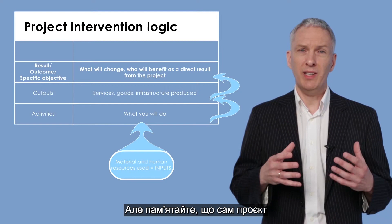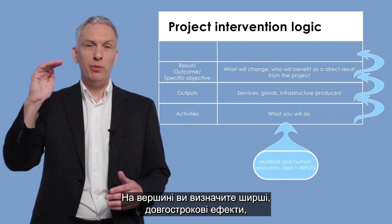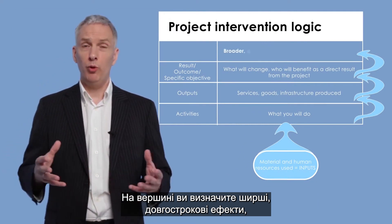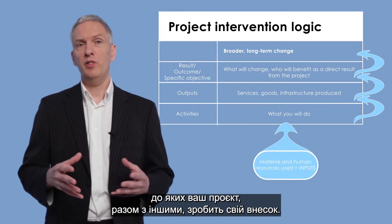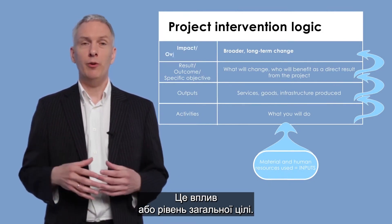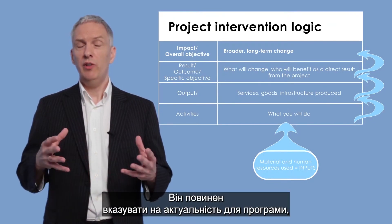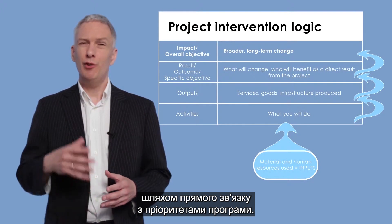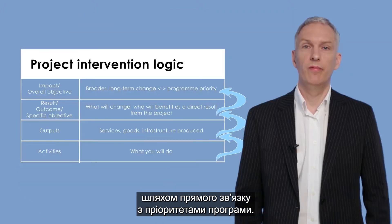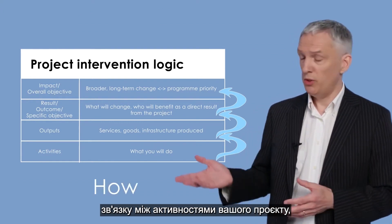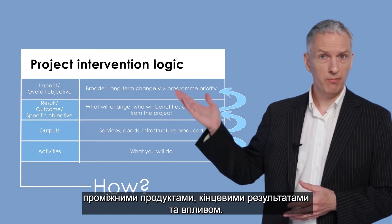Remember, the project itself is expected to achieve the defined results. At the top you will identify the broader, longer-term effects to which your project — along with others — will contribute. This is the impact or overall objective level. It should indicate relevance to the program by being directly linked to a program priority. There should be logical links between your project's activities, outputs, results, and impacts.